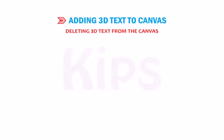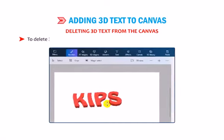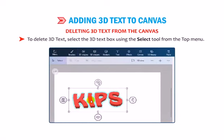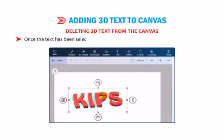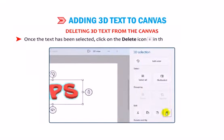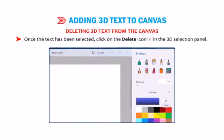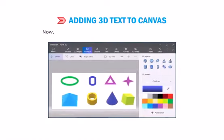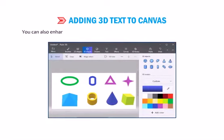Deleting 3D text from the canvas: To delete 3D text, select the 3D text box using the Select tool from the top menu. Once the text has been selected, click on the Delete icon in the 3D selection panel. Now, you have learned how to draw 2D and 3D objects in Paint 3D. You can also enhance the look of your artwork using colors, textures and effects.